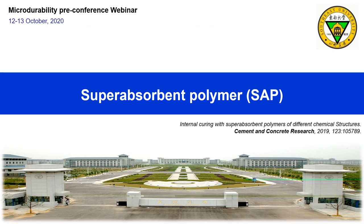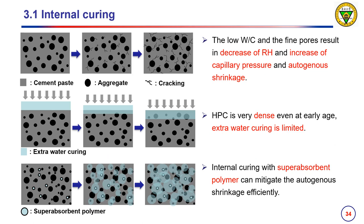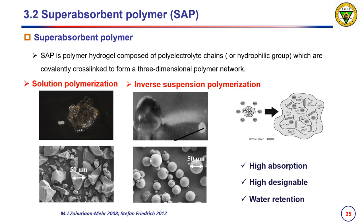The third part is SAP, contributed by PhD student Zhong Peihua, who is co-supervised by Professor Ulm at EPFL. As we all know, the lower water-to-cement ratio and fine pores result in a decrease of relative humidity, and an increase of capillary pressure and autogenous shrinkage. High-strength concrete is very dense, even at early age, so external water curing is limited. Therefore, internal curing with superabsorbent polymer can mitigate autogenous shrinkage efficiently. SAP is a polymer hydrogel composed of polyelectrolyte chains, which are covalently cross-linked to form a three-dimensional polymer network. When SAP is immersed in water, capillary action draws water in and the electrolyte on the chain dissociates.